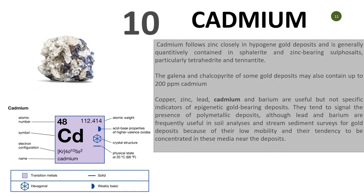Number ten is cadmium. Cadmium follows zinc closely in hypogene deposits. Most hypogene gold deposits have cadmium entirely contained in sphalerite and zinc-bearing sulfosalts. Cadmium values are very useful as indicators of epigenetic gold-bearing deposits and tend to signal the presence of polymetallic deposits. Lead and barium are also frequently useful in soil analysis and stream sediment surveys for gold deposits because of their low mobility and tendency to be concentrated.